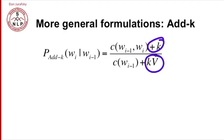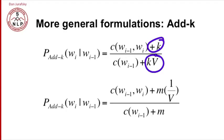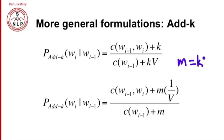We can modify that slightly by introducing a new variable m equals kV. This gives us a new way of writing add-k smoothing, and that's going to be a helpful reformulation.